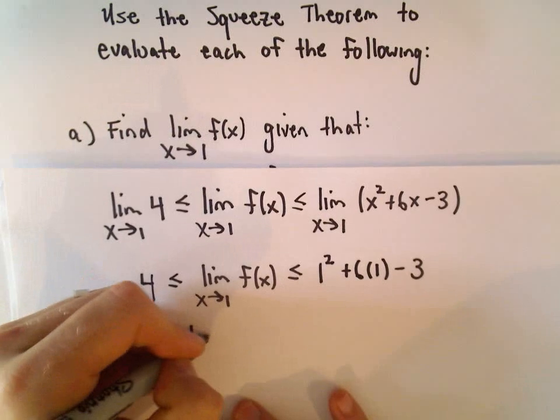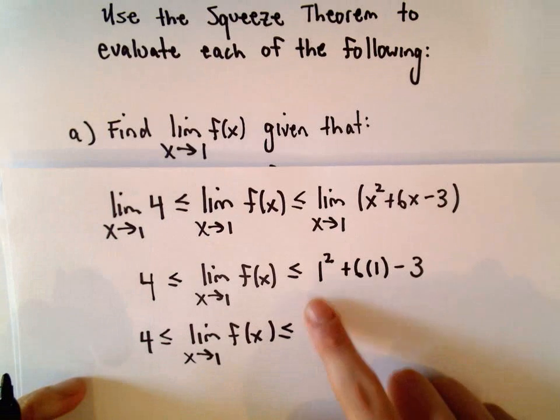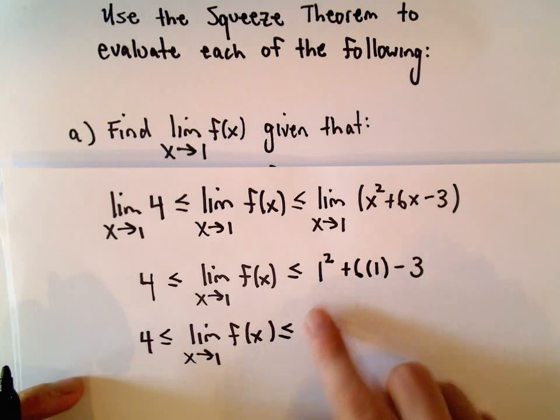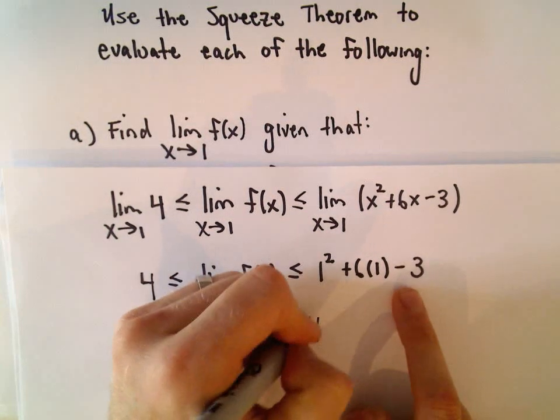So we've got 4 is less than or equal to the limit as x approaches 1 of f of x. And let's see, so 1 squared is 1, 6 times 1 is going to give us, so 1 plus 6 is 7, 7 minus 3 is 4.